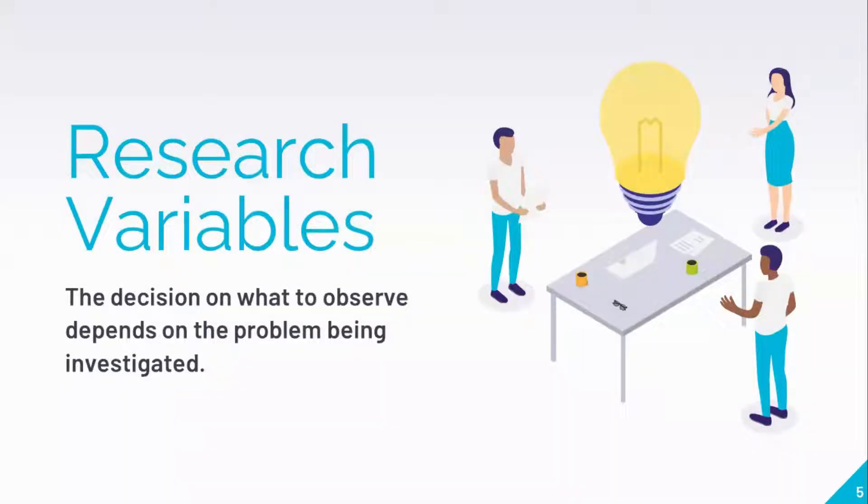Research Variables. The decision on what to observe depends on the problem being investigated. There are many variables to watch and observe. This requires that in the research design of the problem being investigated, all relevant factors must be specified. The researcher must be knowledgeable about variables.